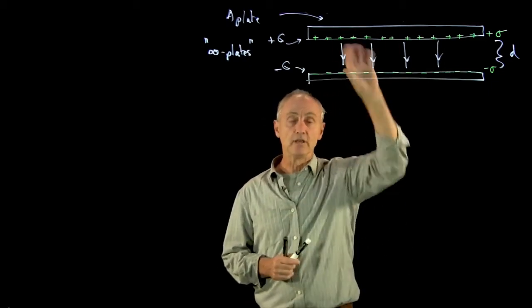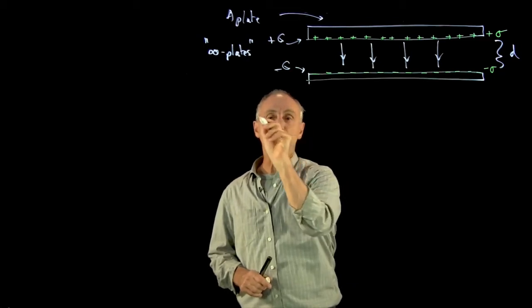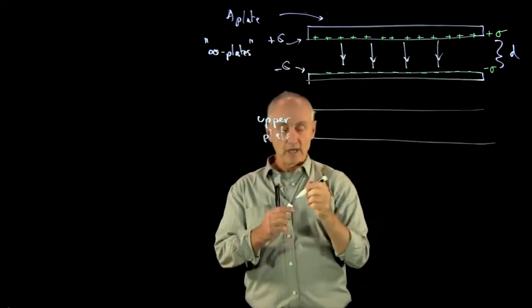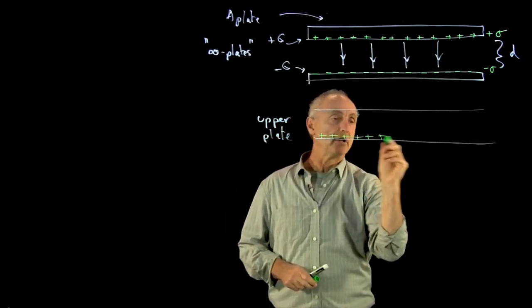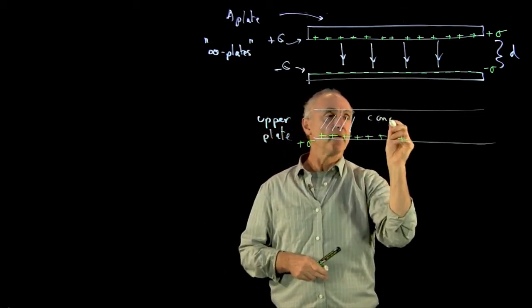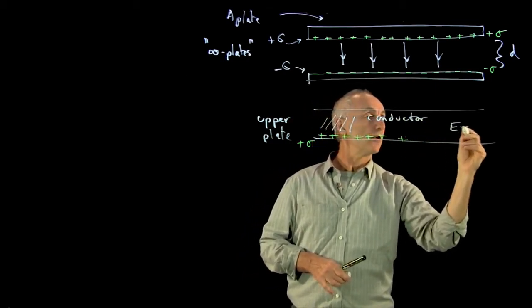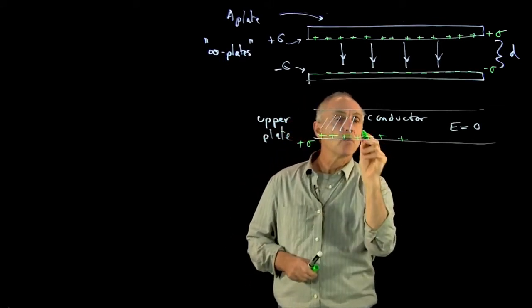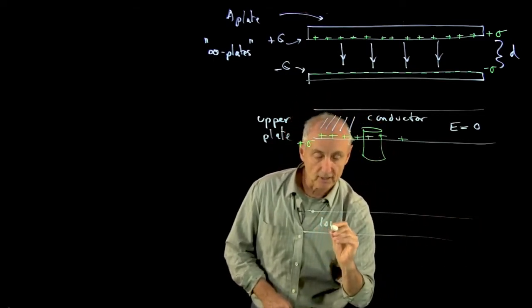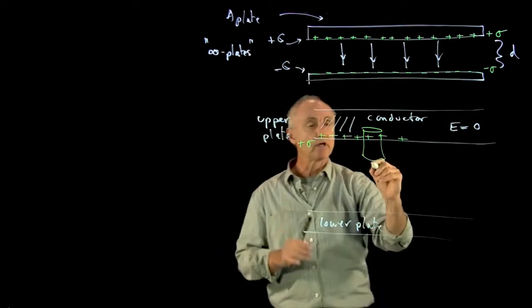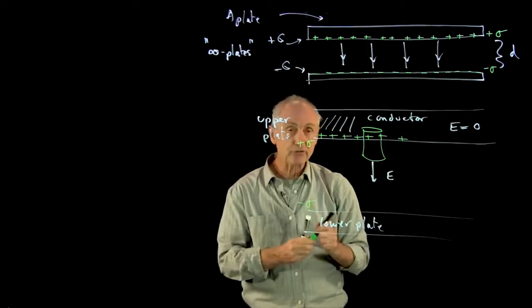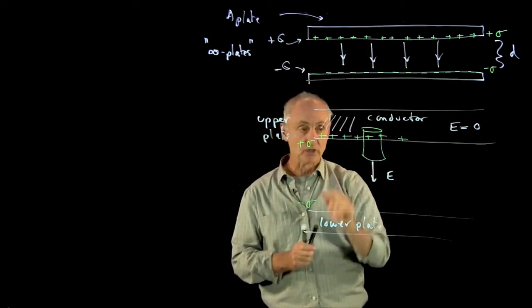Now, this is where Gauss's law is tricky, which we've already done for the parallel plates. Let's just look at that upper plate for a moment to remind you how the calculation goes — let's blow it up. The charges are down here; this is our plus sigma. This is the conductor of the upper plate where E is zero. The field in between the plates is due to both plates — minus sigma and plus sigma. Gauss's law is dealing with the total field, which is already the superposition of these two fields.